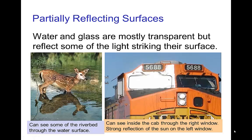Some surfaces are partially reflecting. We see examples here where the reflection from the surface of water and from the surface of glass is partially reflecting but partially transmitting. We can see some of the riverbed bottom, some of the logs on the bottom. With this train, on one side we see a strong reflection of the sun; on the other side we can see in through the window — you can see the hat of the guy driving the train.